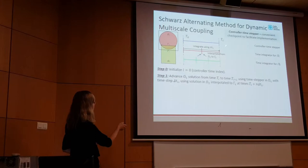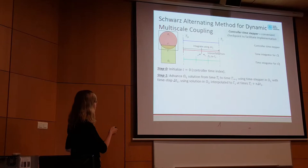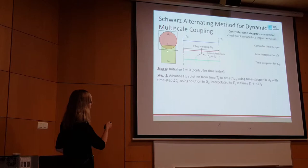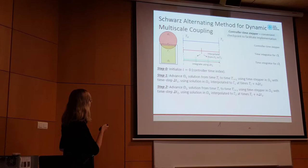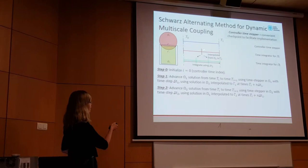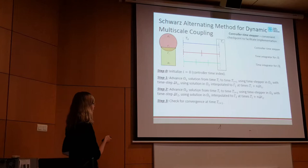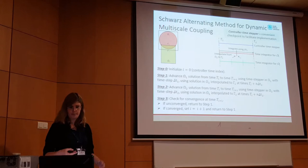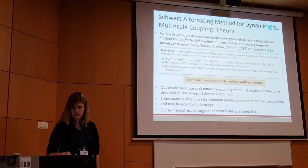You start in the first controller time-step: take the solution in omega-1, advance it from T0 to T1 using whatever time-integrator and time-step you want, interpolating the solution from omega-2 onto gamma-1, not just in space but also potentially in time. Then go to omega-2 and do the same, interpolating from omega-1 to gamma-2. Once both domains have reached T1, check for convergence. If not converged, return to step one. If converged, go to the next controller time-step. Notably, you can use different integrators and different time-steps within each domain.